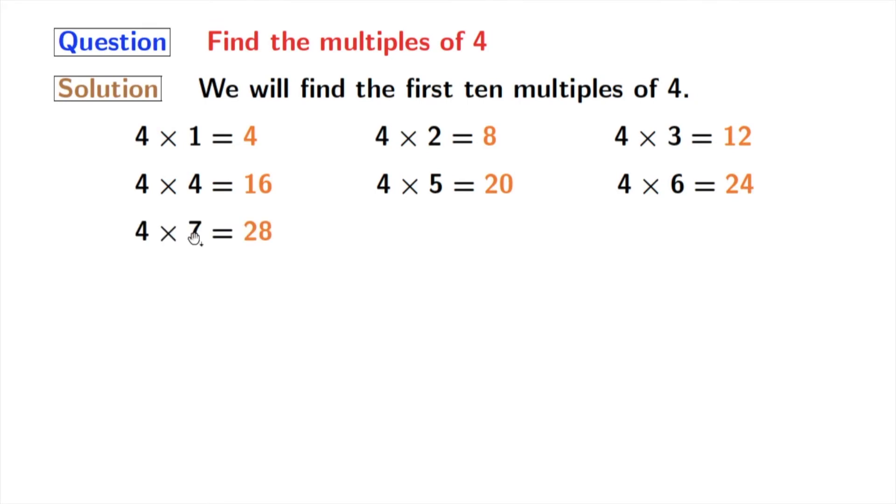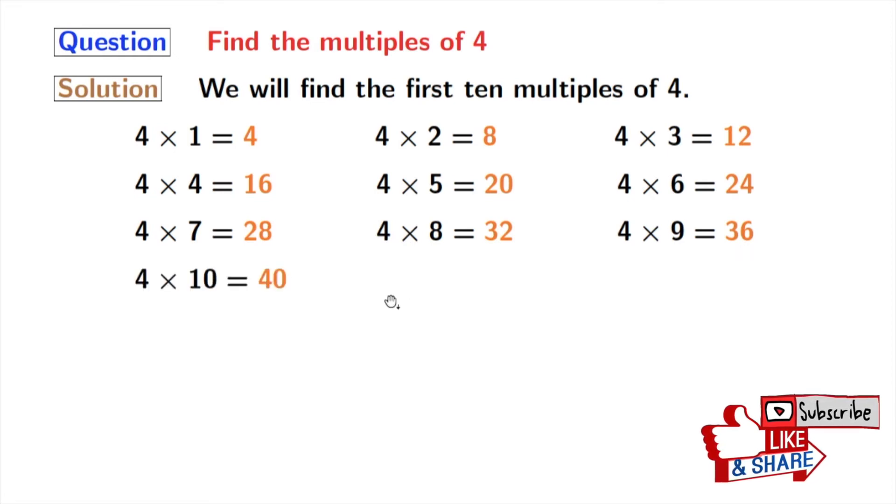If we multiply 4 with 7 we get 28. If we multiply 4 with 8 we will get 32. Multiplying 4 and 9 we get 36. And if we multiply 4 with 10 we get 40.